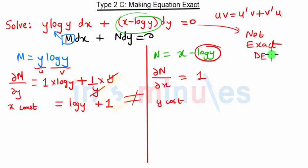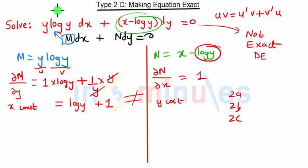We now check whether our equation is of type 2a, 2b, or 2c. It cannot be represented as type 2a, and it is not a homogeneous equation. So we consider type 2c. Closely observing the partial derivative, we see it contains only y terms, confirming this is type 2c.